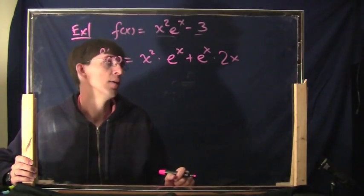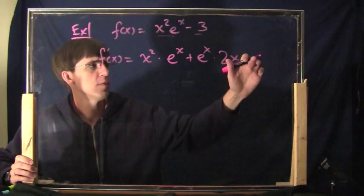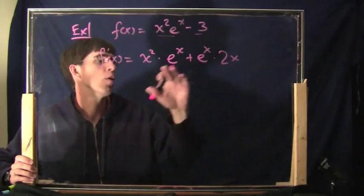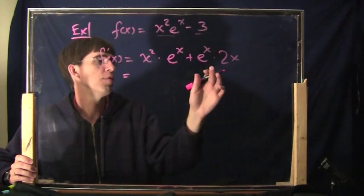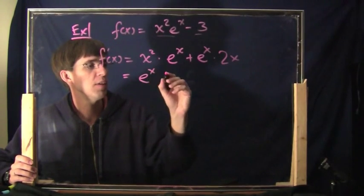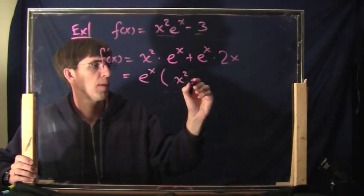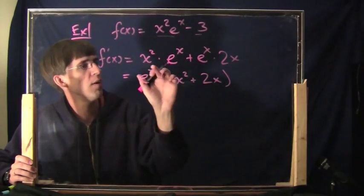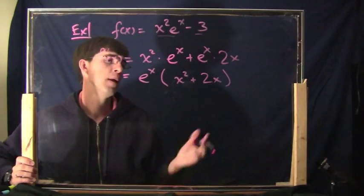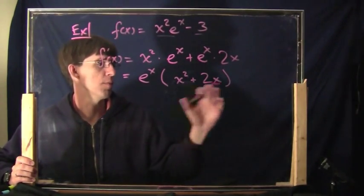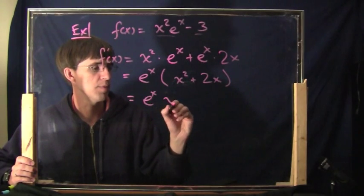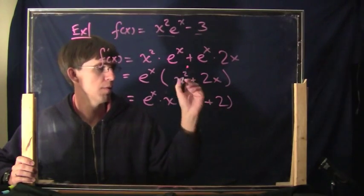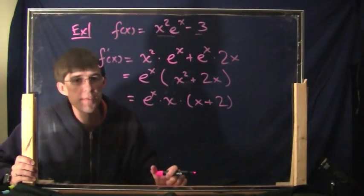This is the derivative. Let's simplify as much as we can. Remember what happened to the minus 3? It goes away because it was a constant. Both terms have e to the x, so we can factor out e to the x. What's left over is x squared plus 2x. And then you can factor a little bit more — factor out x — so it's e to the x times x times (x + 2). This is the derivative.